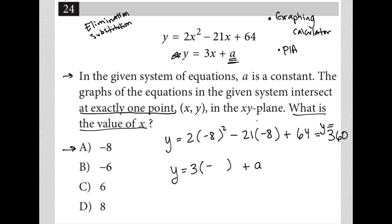And here, when I put that same negative 8 in, I get negative 24 plus a. But because I know that at the point of intersection, my y values have to be the same, then I know that this negative 24 plus a has to equal my 360, which means that a has to be positive 384. So when I go to my calculator, I'm going to plug in this equation here, the first one. And then the second equation, I'm going to plug in y equals 3x plus 384.